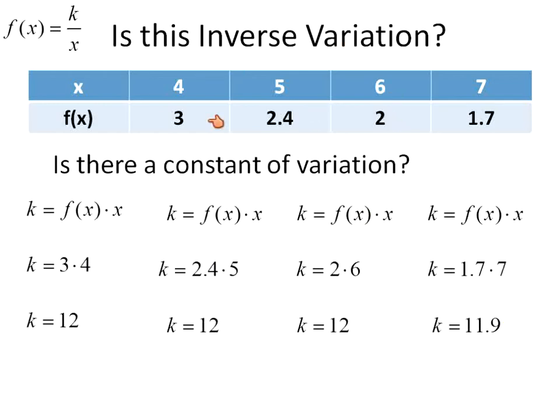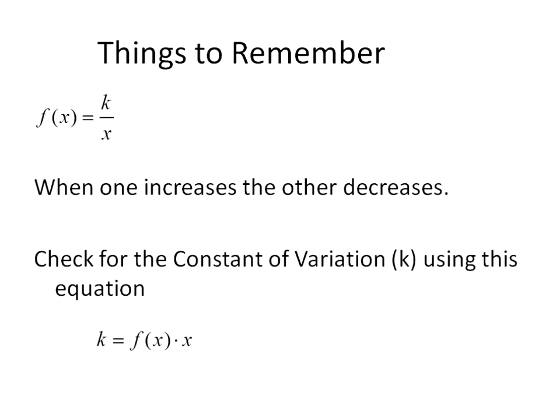If it was just these three columns, then we would have had an inverse variation table. Because I added in this one that's not quite right, what happens is this table then is therefore not representative of an inverse variation function. Because that one didn't have the same constant. If it did have the constant of 12, then it would be inverse variation.